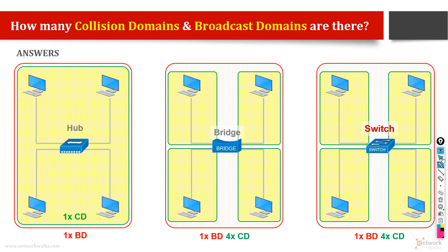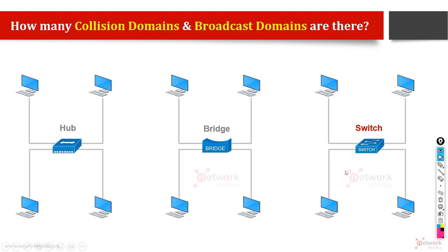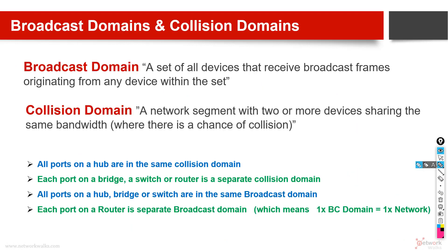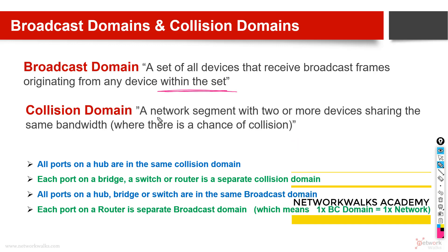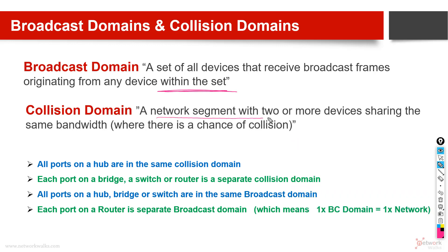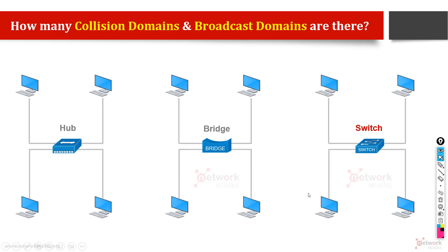A broadcast domain is a set of all the devices that receive broadcast frames originating from any device within the network. And what is a collision domain? A collision domain is a network segment with two or more devices sharing the same bandwidth, which means only one device can send a message at one time.